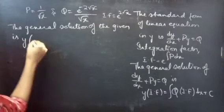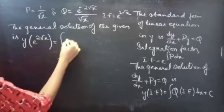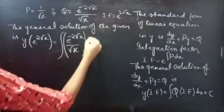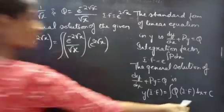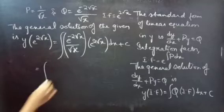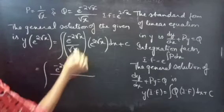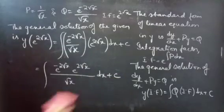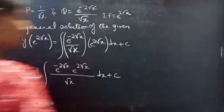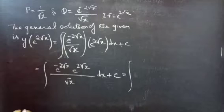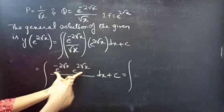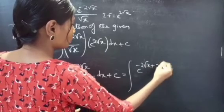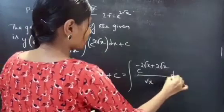The general solution is: y · e^(2√x) = ∫ [e^(−2√x) / √x · e^(2√x)] dx + C. Adding the exponents, e^(−2√x) · e^(2√x) = e^(−2√x + 2√x) = e^0, with denominator √x remaining. So this equals ∫ e^0 / √x dx + C.